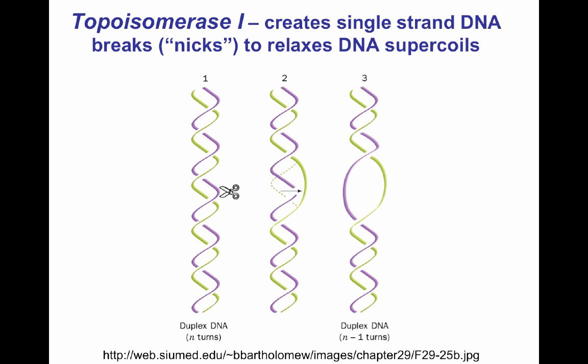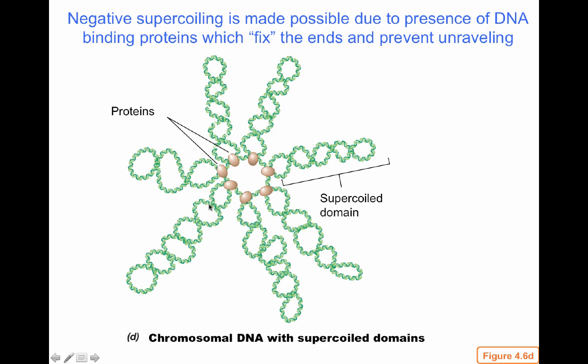Negative supercoiling is made possible by the presence of proteins that bind the DNA and generate supercoiled domains. These fix an area in a compact state that can then be released by topoisomerase I to allow the molecule to be replicated.